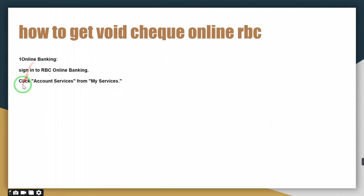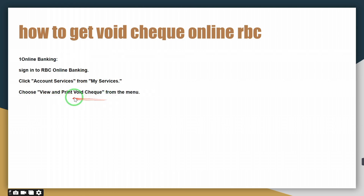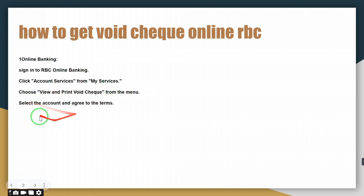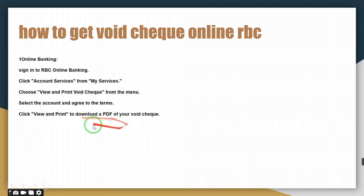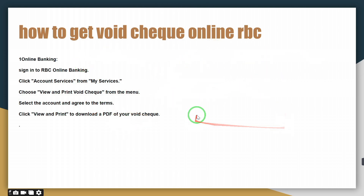The first step is to sign into your RBC online banking account. The second step is to click on Account Services from My Services. The third step is to view and print the void check. The fourth step is to select the account and agree to the terms. The fifth step is to simply click, view, and download the PDF of your void check.